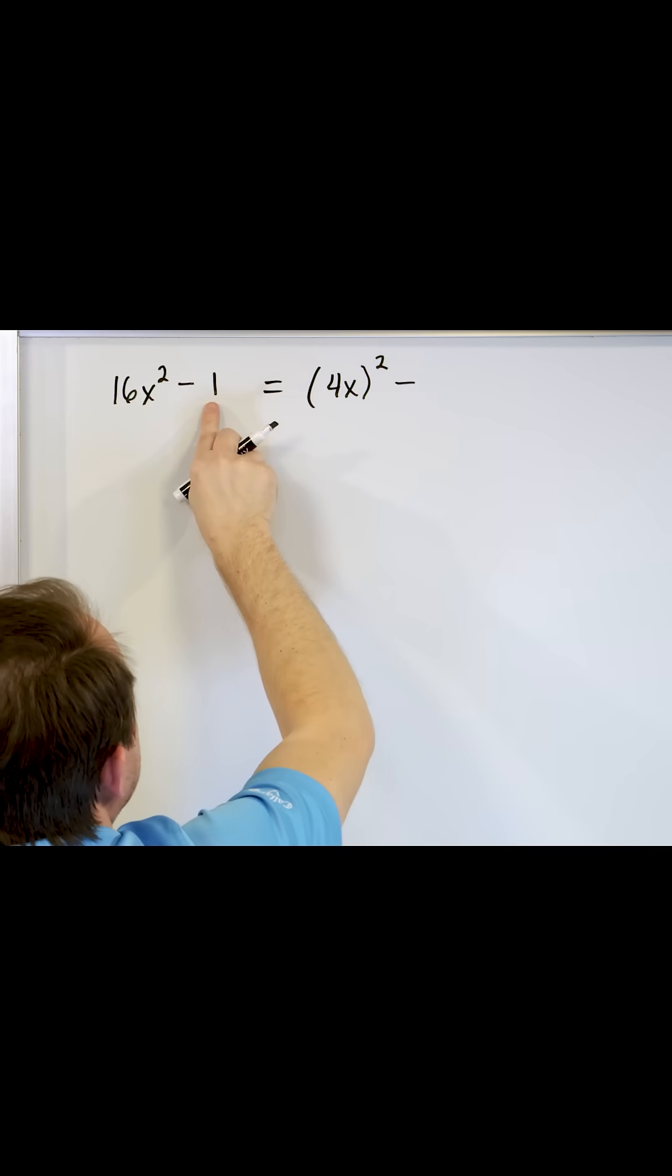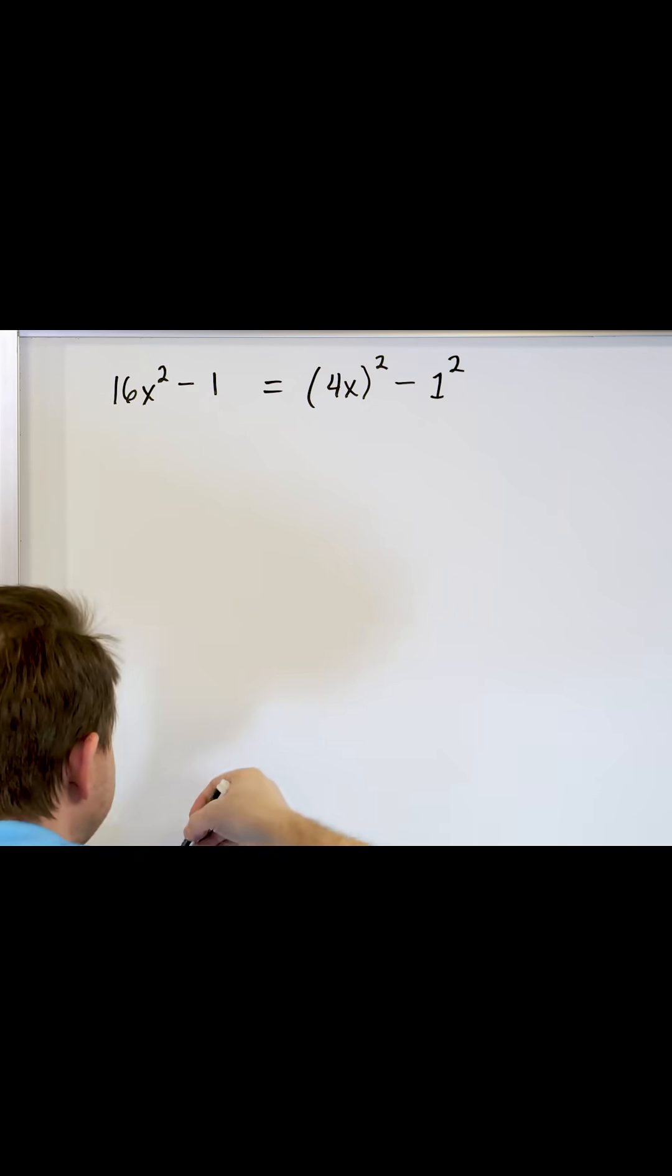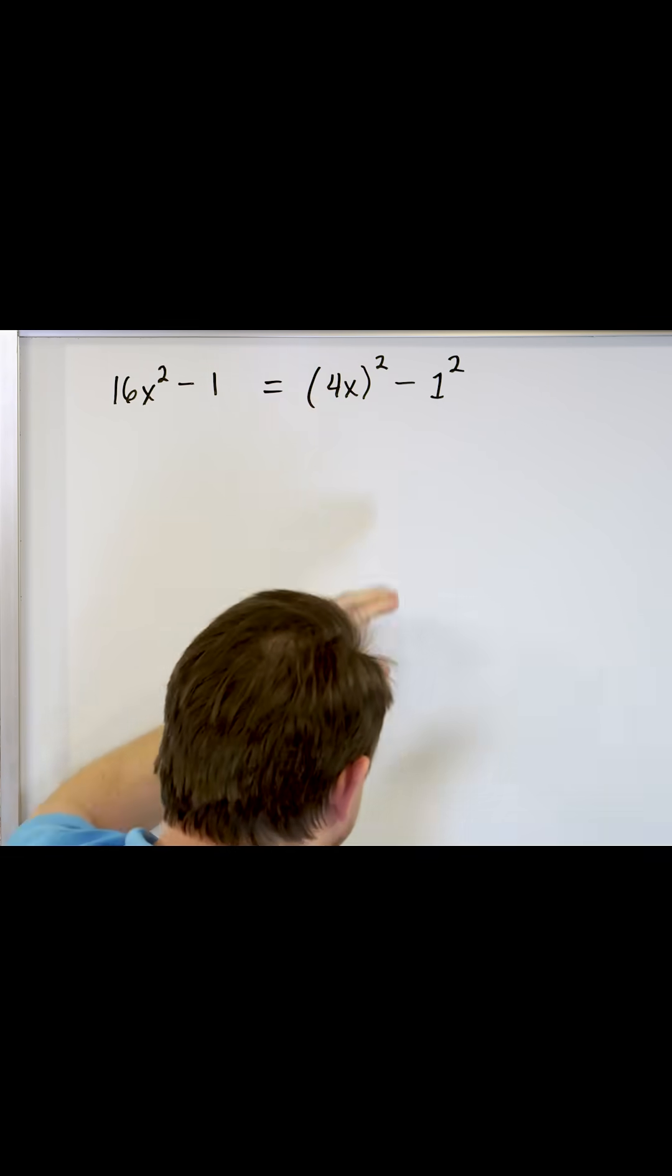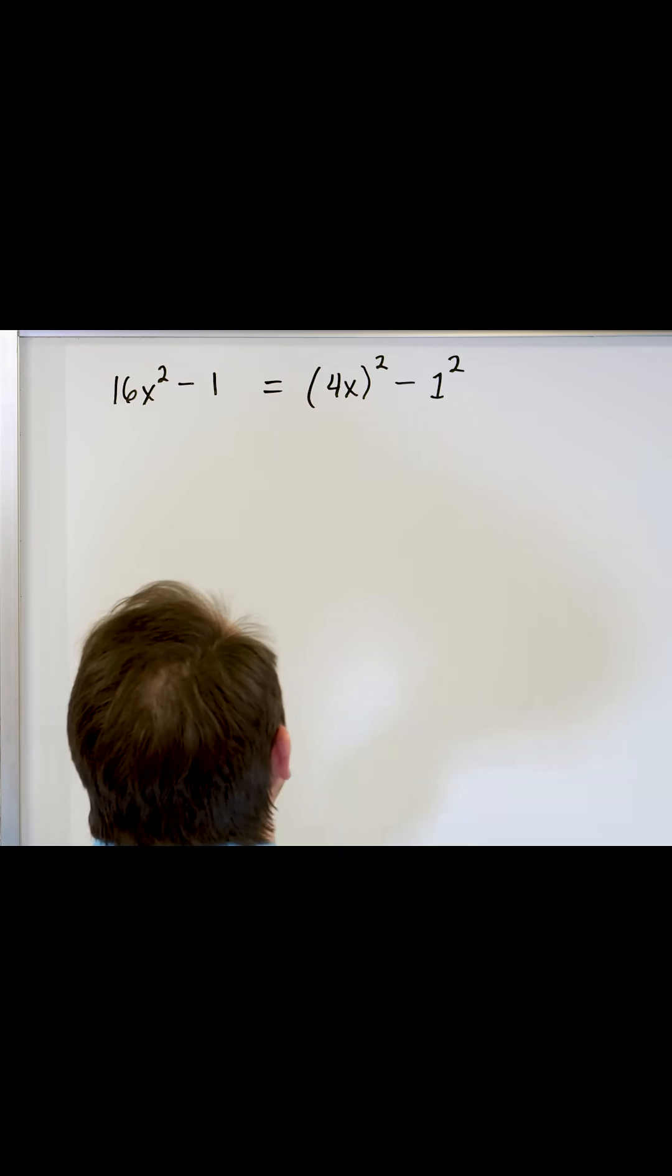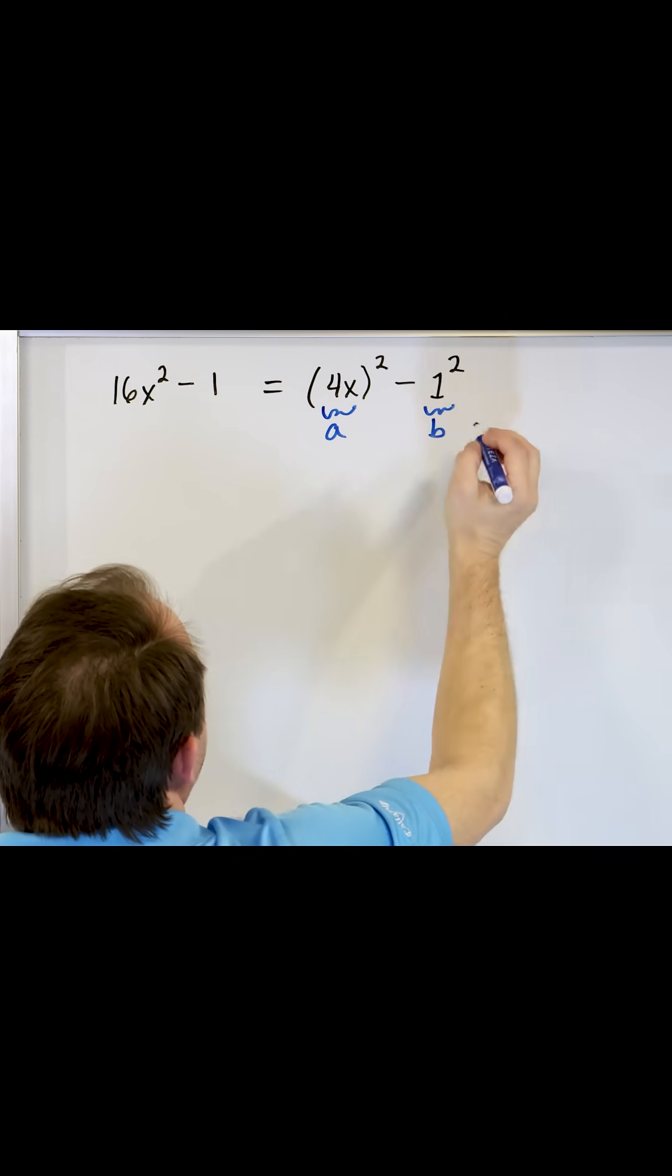Minus, it has to be a difference, and 1 is a perfect square also because it can be written as 1 squared. So you see, even though the problem doesn't look like a difference of two squares, it actually is the difference of two squares because a squared minus b squared where a is 4x and b is 1.